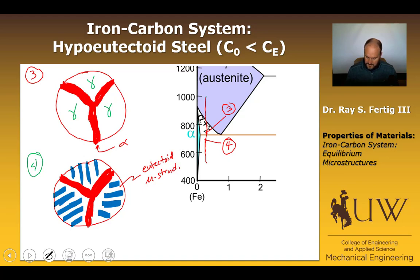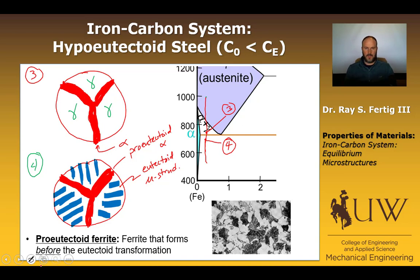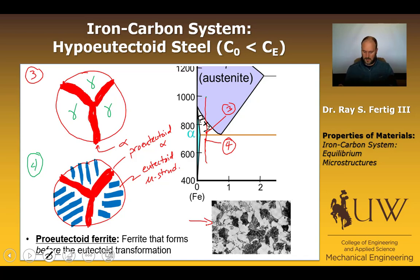This also has a specific name. The alpha that formed before the eutectoid transformation is called pro-eutectoid alpha, or pro-eutectoid ferrite — ferrite that forms before the eutectoid transformation. In the micrograph shown, the striated or lamellar regions are the pearlite or eutectoid microstructure, and the light-colored regions are the pro-eutectoid alpha.